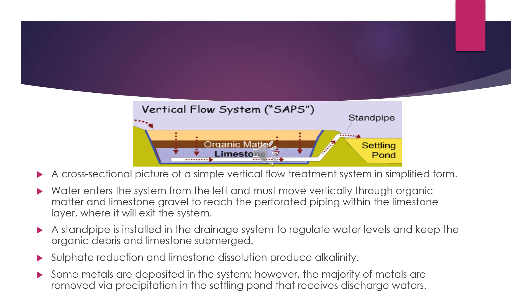Here we're going to look at the vertical flow system, also known as SAPS. There is a cross-sectional picture of a simplified vertical flow treatment system. Water enters the system from the left and must move vertically through organic matter and limestone gravel to reach the perforated pipe within the limestone layer, where it exits the system. A standpipe is installed in the drainage system to regulate water levels and keep the organic debris and limestone submerged. Sulfide reduction and limestone dissolution produce alkalinity. Some metals are deposited in the system; however, the majority of metals are removed via precipitation in the settling pond that receives discharge waters.